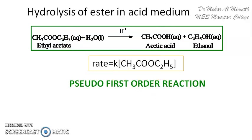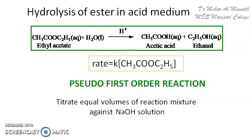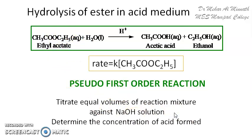Now, how do we carry out the kinetic studies? We take the reaction mixture in the reaction pot, carry out the reaction, and titrate the reaction mixture at regular intervals of time against NaOH. The volume of NaOH consumed can be related to the amount of ethyl acetate present in the reaction mixture or the acetic acid formed during the reaction.